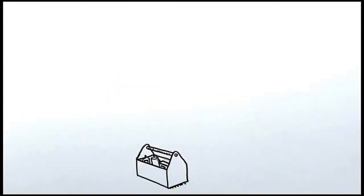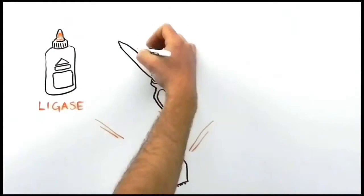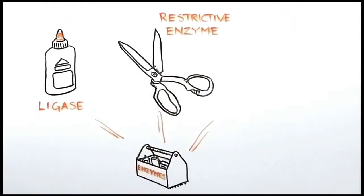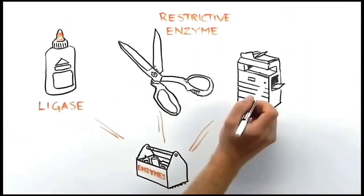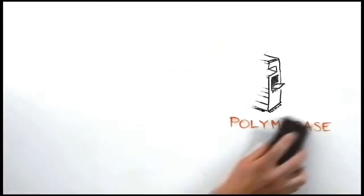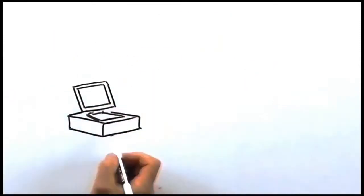Furthermore, nature has evolved an entire enzymatic toolkit for making modifications to DNA, such as splicing it together with enzymes called ligases, or cutting it apart with restriction enzymes, or making copies of it with polymerases.